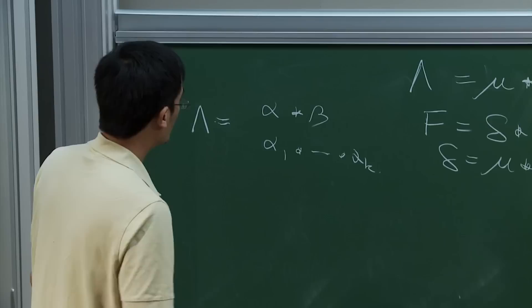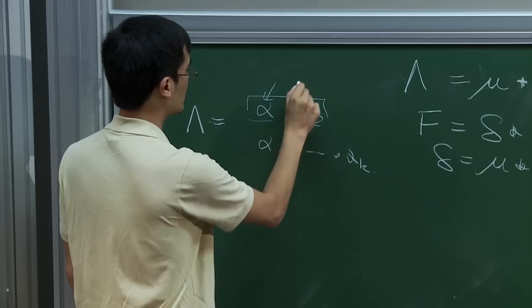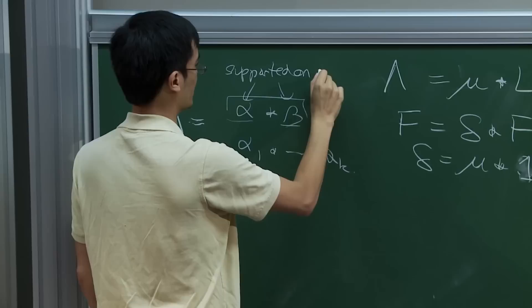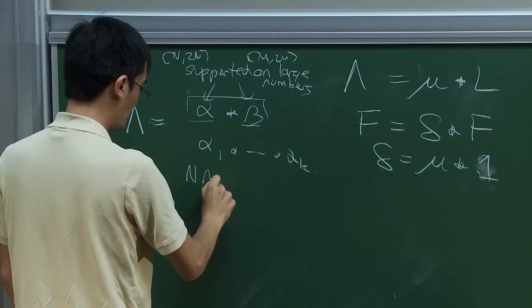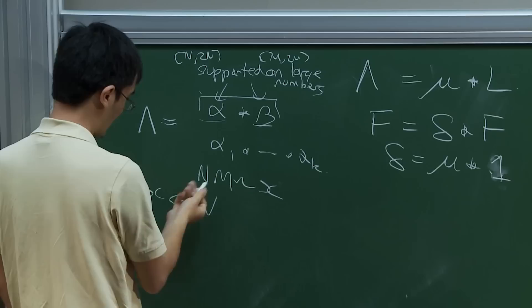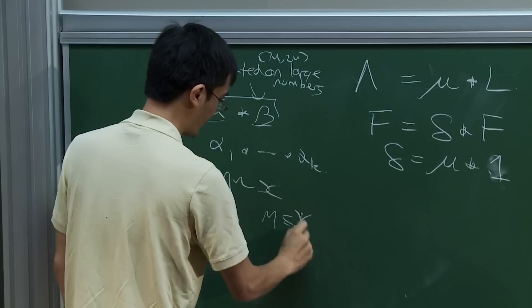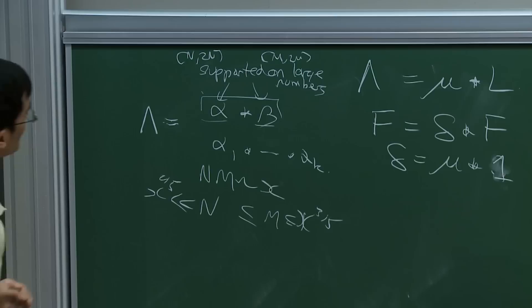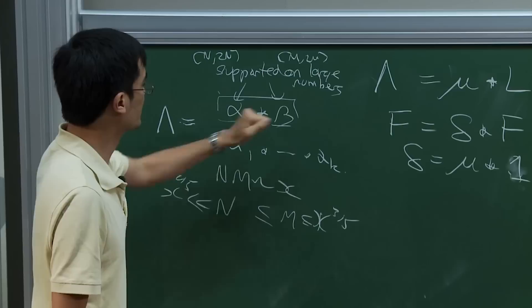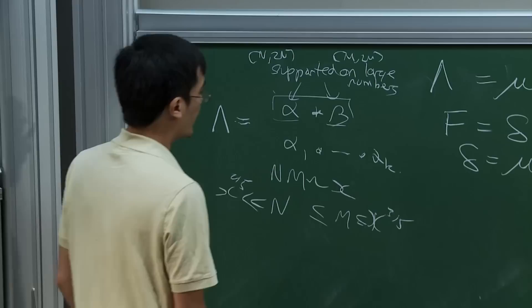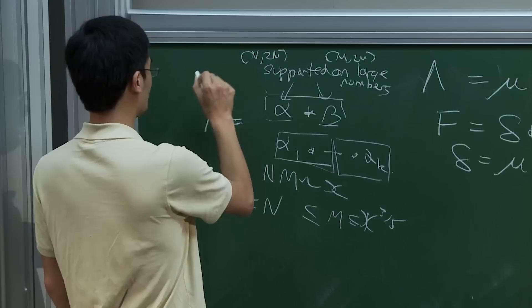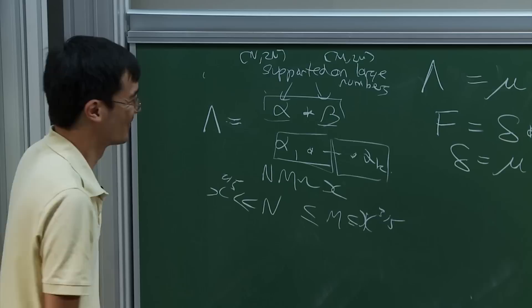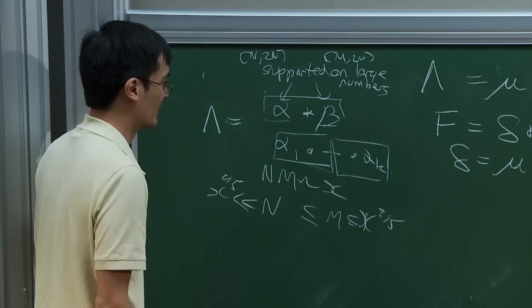There are two ways in which you can be non-degenerate. One way is a convolution where the terms are kind of balanced—both supported on fairly large numbers, like maybe one factor between N and 2N with N bigger than x to the 2/5, and the other between M and 2M with M less than x to the 3/5. Then you have a lot of cancellation. Another good term is one where the imbalance is present but the big term is very smooth—like the constant function 1 or the log function, truncated in a nice way. If you have a very smooth function, you can often control that sum very precisely using Poisson summation or similar techniques.